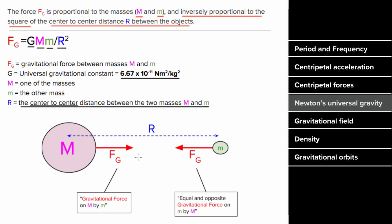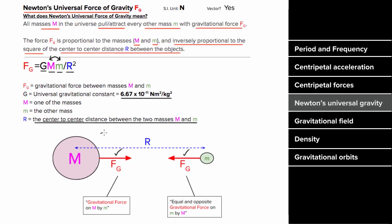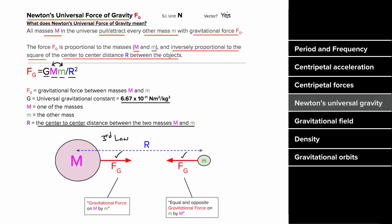Even if the two objects have different masses, the magnitude of the force they exert on each other is the same. This is illustrated by the formula — you can swap the two masses and get the same number — and it's also something we know from Newton's third law. This force of gravity is a vector, and its direction is always such that it attracts every other mass. Since this is a force, the unit is Newtons.